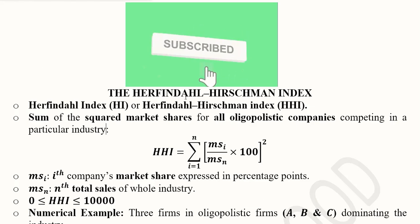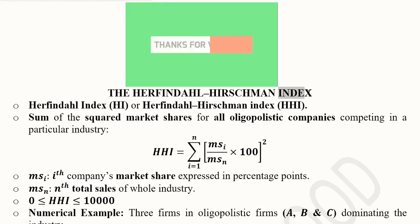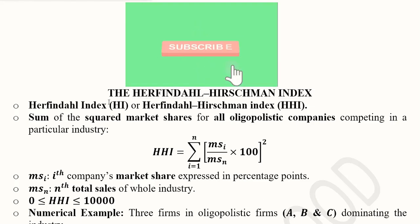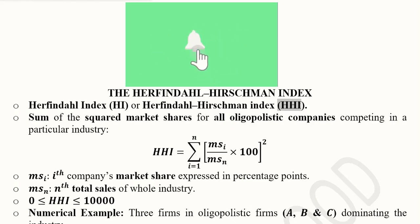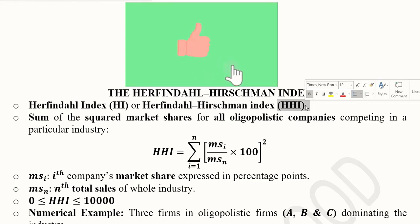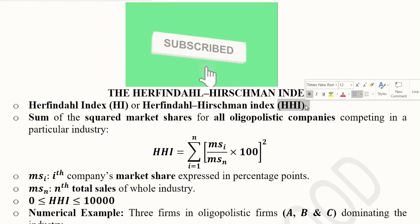This index was contributed by two people — Herfindahl and Hirschman. Their collective contribution to economics is known as the Herfindahl-Hirschman Index, put in brief form as the acronym HHI.